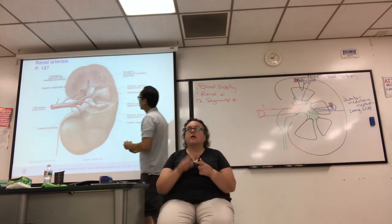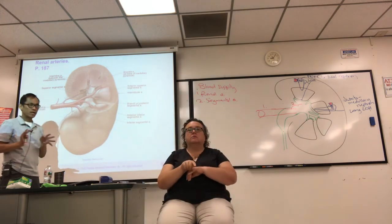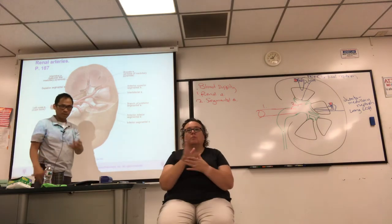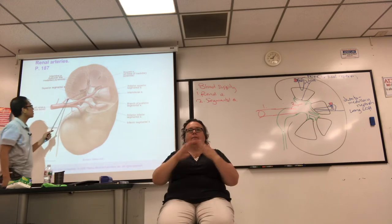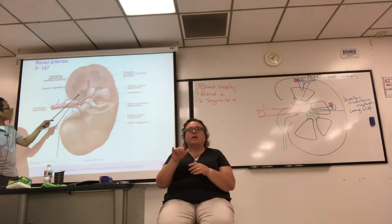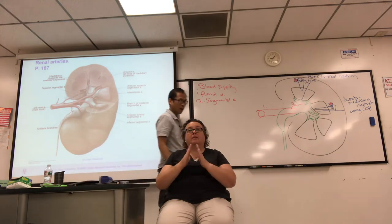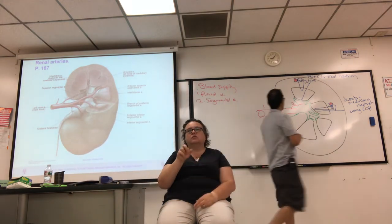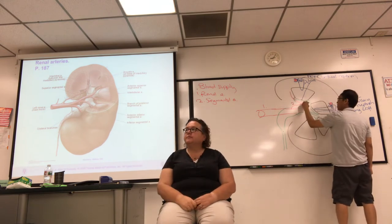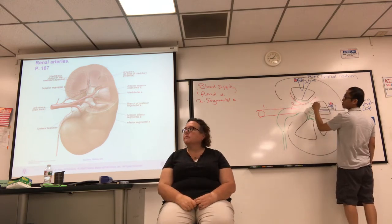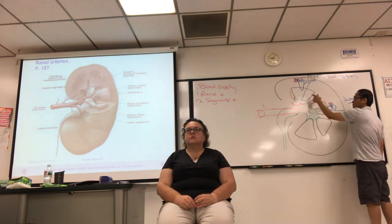Then it branches again and goes in between the lobes of the kidney — which are the pyramids. The branches that go in between the pyramids are called interlobar arteries — so look for interlobar between the pyramids.